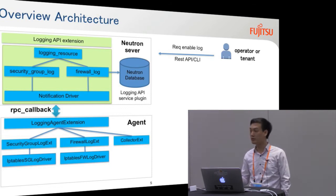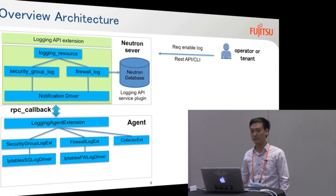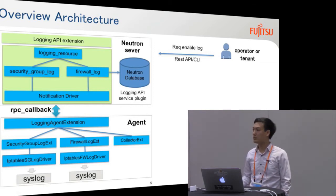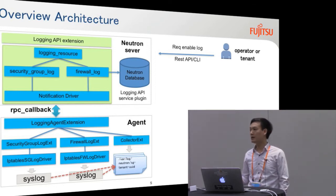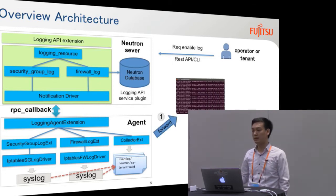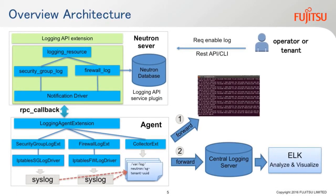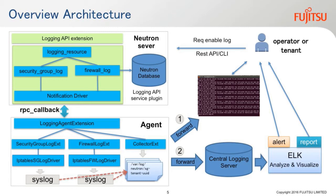After processing in the Neutron server, we will use RPC to control the Neutron agent with the logging agent extension — a new extension we are proposing in Neutron. Currently we are trying to support security group and firewall logging, but in the near future it can be flexible and pluggable for other resources. After enabling the log, the log will be forwarded to syslog with some basic commands. In the collector extension module, we collect all log data. The operator or tenant can then check the log through the console log or it can be forwarded to a central logging server, depending on user demand. A notification or warning message will then be sent to the operator or tenant.